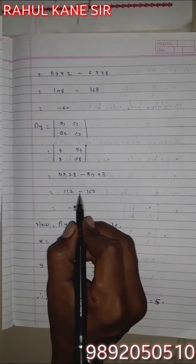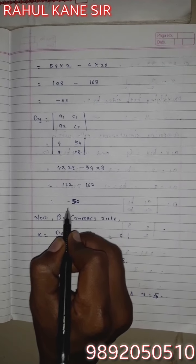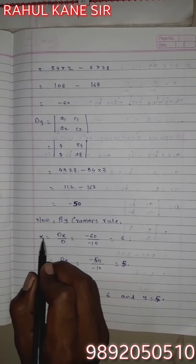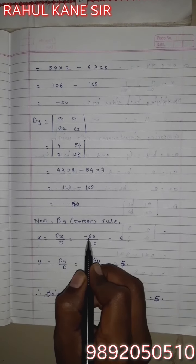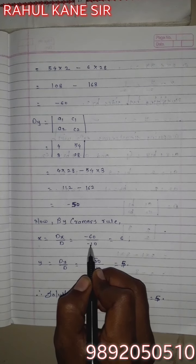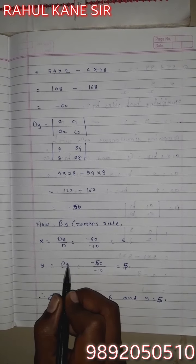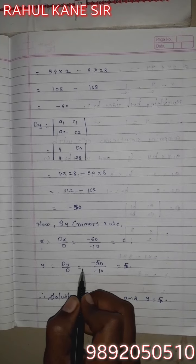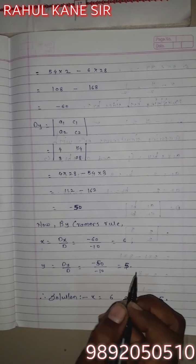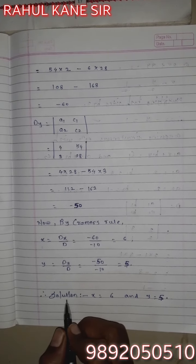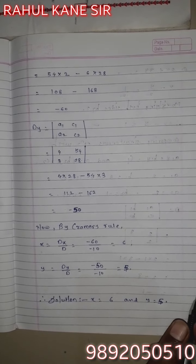Dy: 28×4 minus 54×3 equals 112 minus 162 equals -50. By Cramer's rule: x = Dx/D = -60 ÷ -10 = 6; y = Dy/D = -50 ÷ -10 = 5. Solution: x = 6 and y = 5.